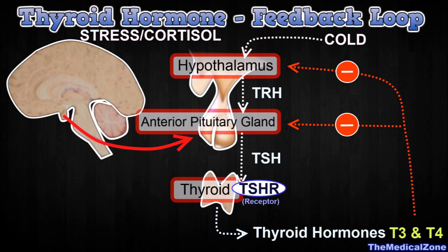Another factor that affects this feedback loop is the amount of stress. During stress, more cortisol will be produced by the adrenal glands, which in turn can decrease the amount of TSH released. This decreases the amount of thyroid hormones, and signs of hypothyroidism may develop.